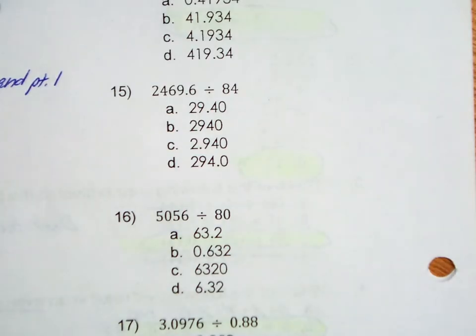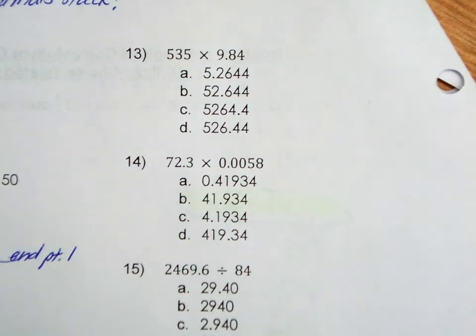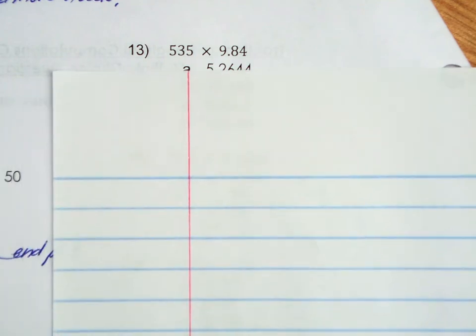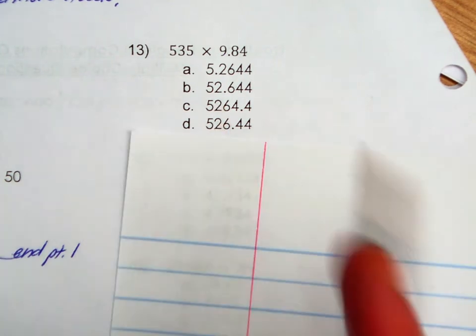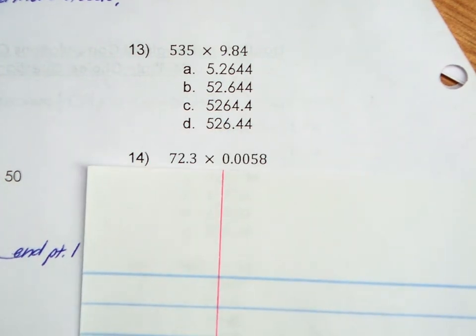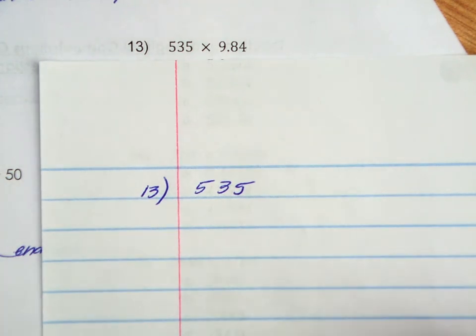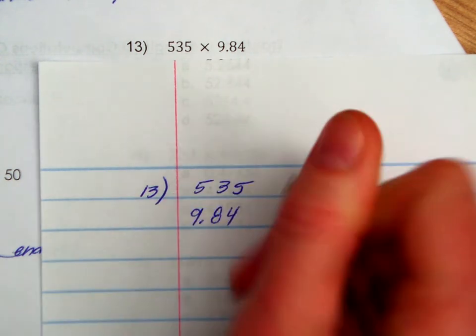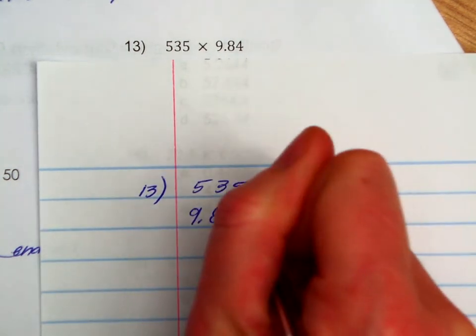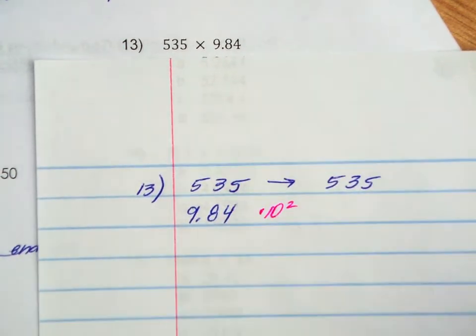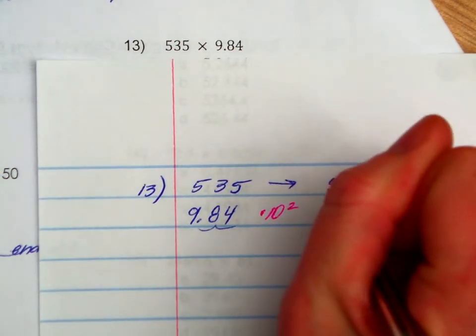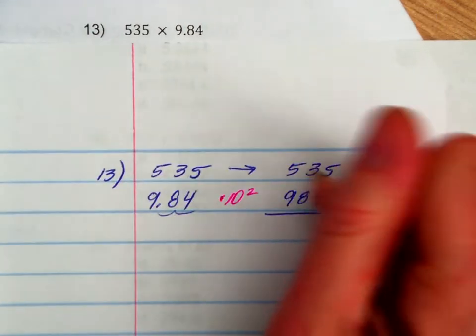We're going to move over to 13, which is a whole number times a rational number. It's almost 535 times 10, so you could make a really good judgment call here. What would 535 times 10 look like? It would be about 5,000-something. So the only thing that looks reasonable is probably answer C. Let's test it out. Let's do our work. I don't need to change 535. There's no decimal in it. I don't need to move anything. I need to multiply by 9.84. This is going to stay the same. But this, if I multiply by 10 to the second power, I can temporarily move the decimal out, which will create a whole number.